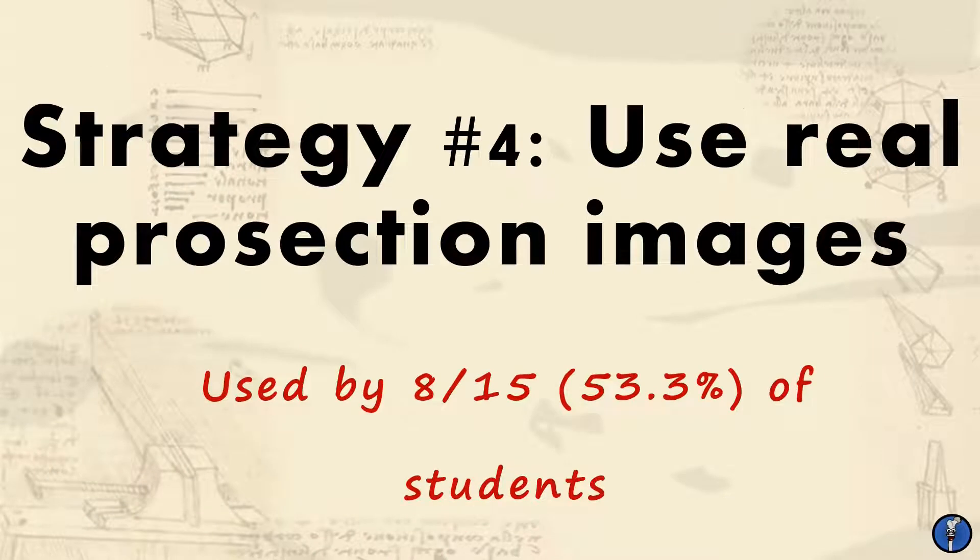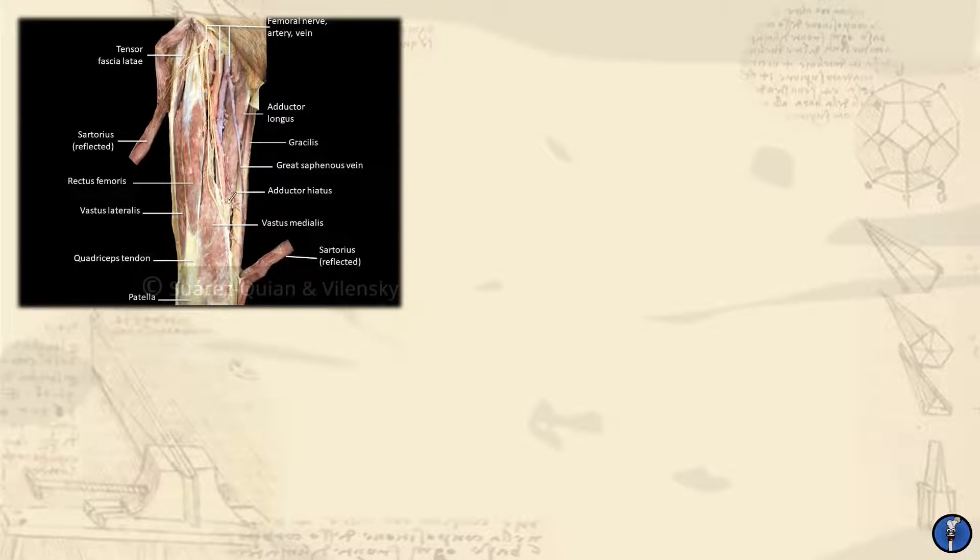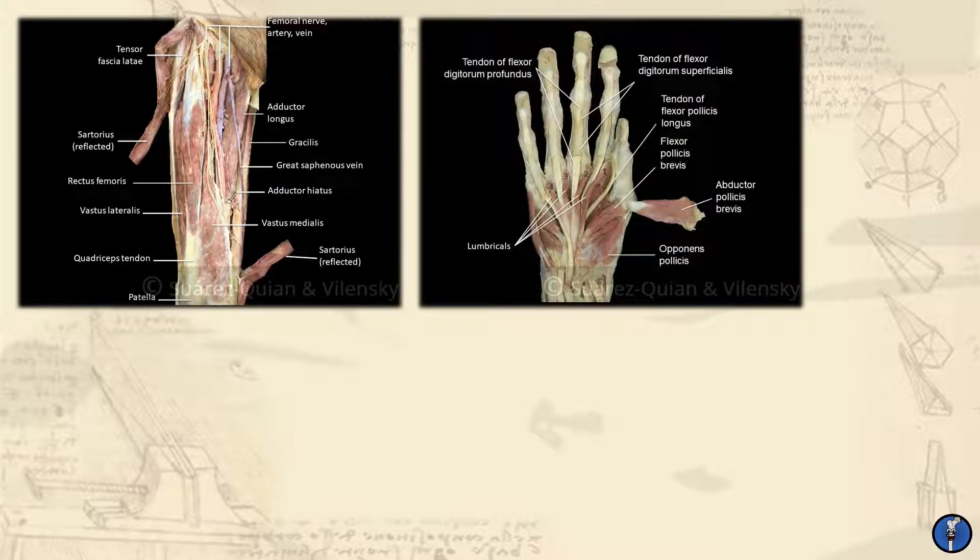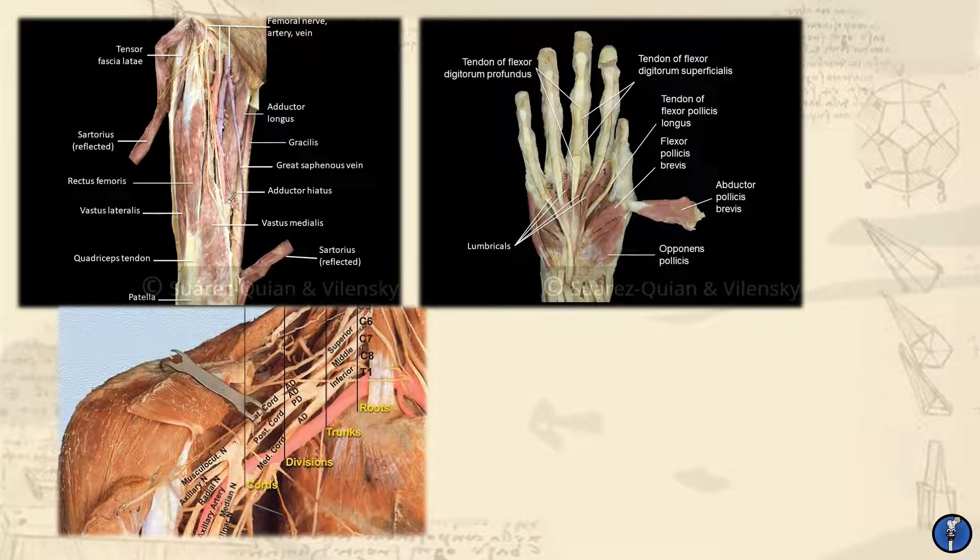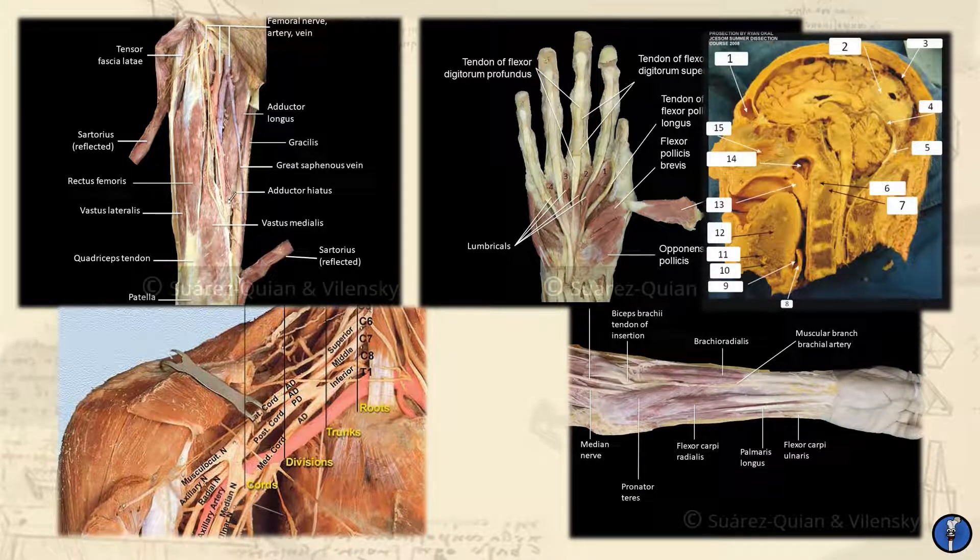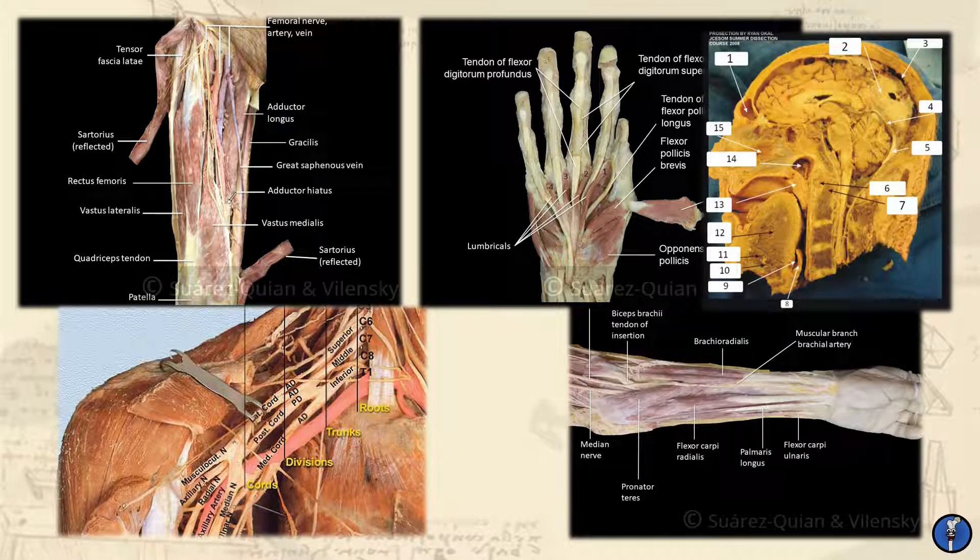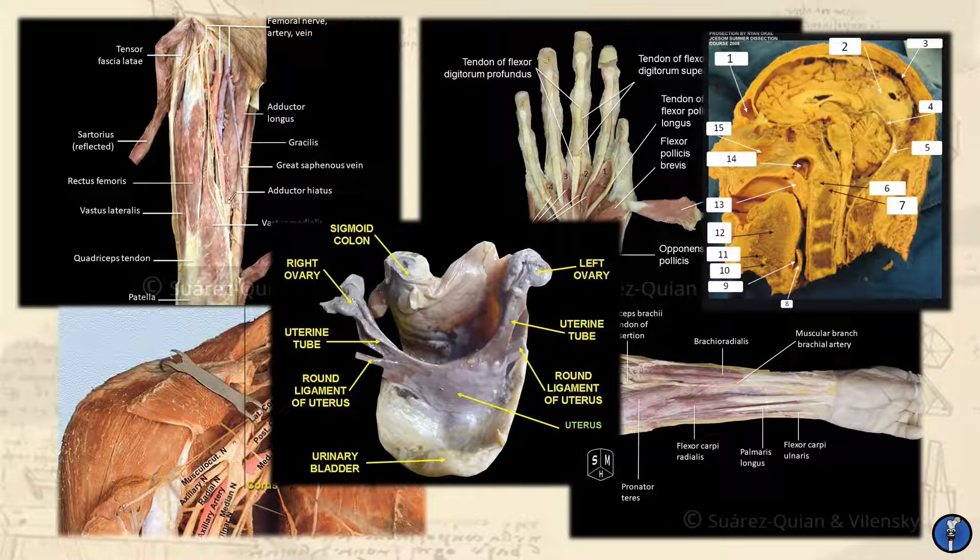Over half of our anatomy intercalators said that looking at and learning from real prosection models or images was invaluable in their study of anatomy. Specific sources such as McMinn's Clinical Atlas of Human Anatomy or the Acland's Anatomy video series have been cited over and over again, but wherever you can get access to real images, make sure you take the chance to utilize them. In reality, anatomy isn't neatly outlined and colored in as you'll find in the textbooks. This might not become apparent until clinical life, but for some of you you'll have exams specifically based on the prosection models at your university. Making sure you take the time to see what real human anatomy looks like in a pre-dissected model is absolutely essential if you plan on passing your exams.